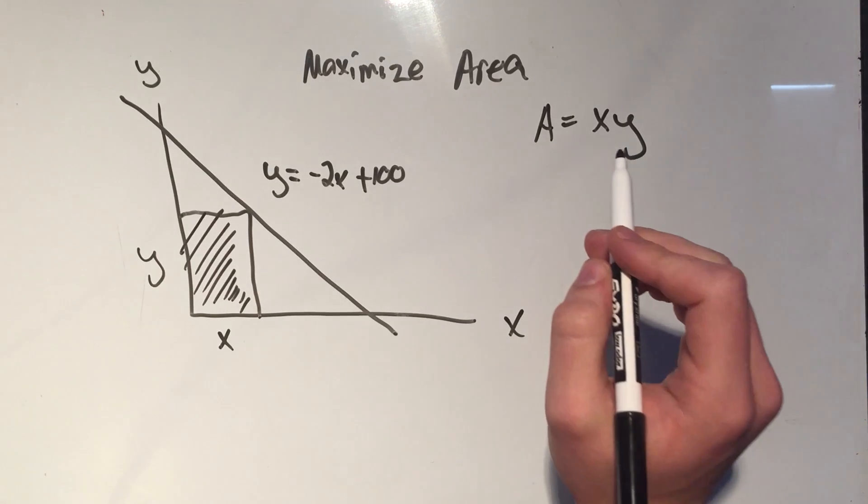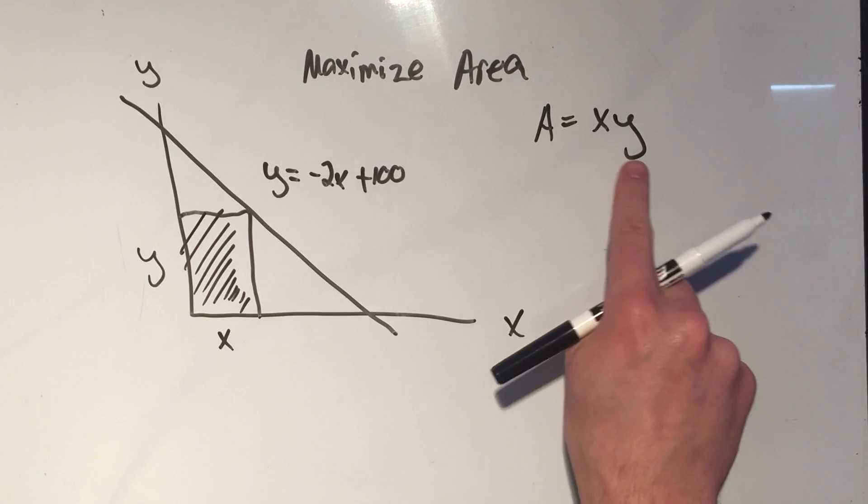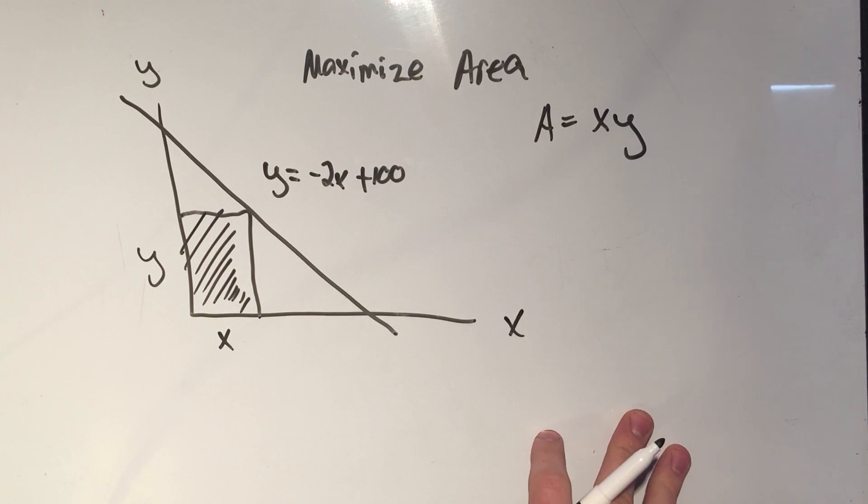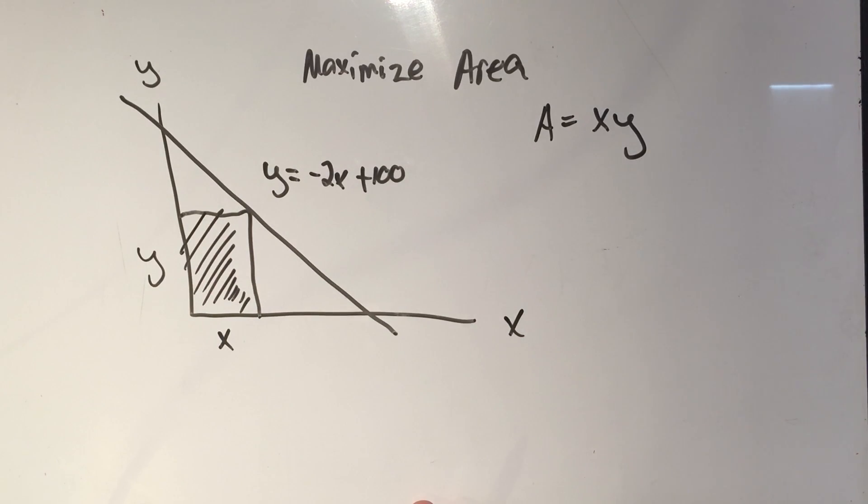This is the thing I want to maximize. This is the thing I want to take the derivative of, but it's in terms of two variables. And whenever you're doing an optimization problem with a constraint, with another equation, you solve for one of those variables and plug it in.